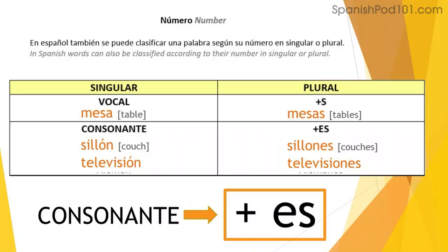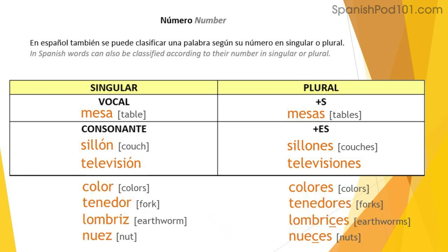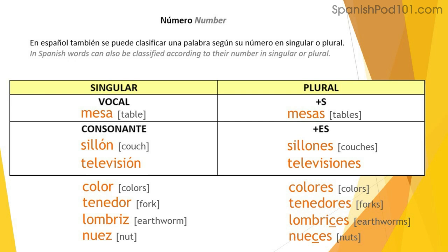Here's how to form the plural: if the word ends in a vowel, add -S. Mesa → mesas, libro → libros, silla → sillas, puerta → puertas, calle → calles, coche → coches. If the word ends in a consonant, add -ES. Sillón → sillones, televisión → televisiones, color → colores, tenedor → tenedores. Note: words ending in Z change the Z to C before adding -ES: lombriz → lombrices, nuez → nueces.